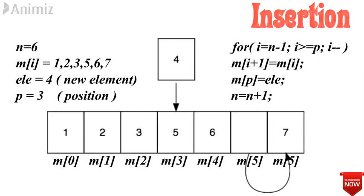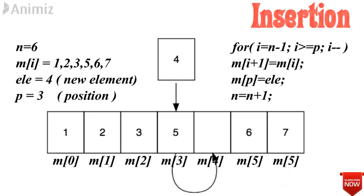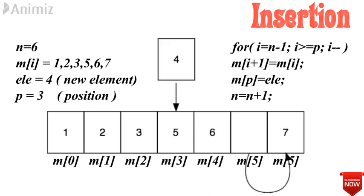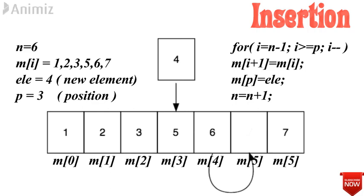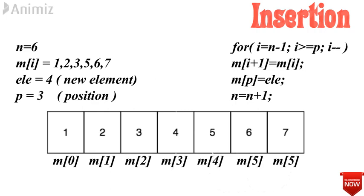We have to empty memory space 3 to insert new element 4 at position 3. Currently, position 3 has value 5, position 4 has value 6, and position 5 has value 7. This is done by shifting: 7 is shifted to memory location 6, 6 is shifted to memory location 5, and 5 is shifted to memory location 4. By doing this, each element shifts right so that memory location 3 becomes free.